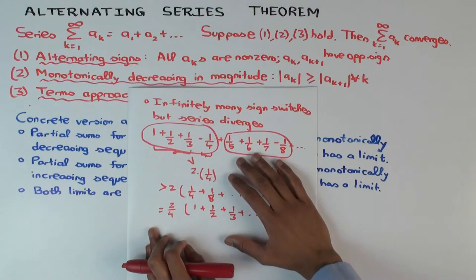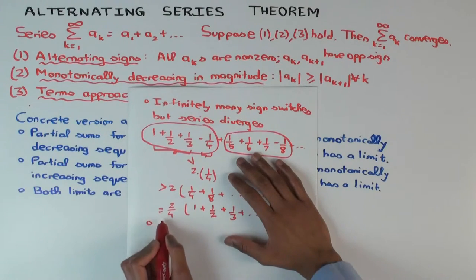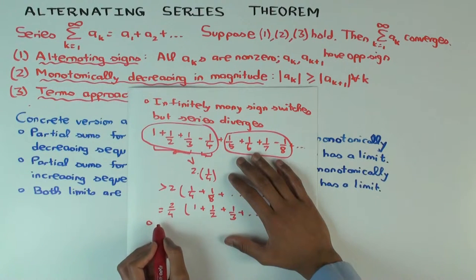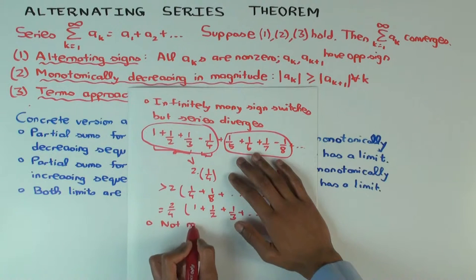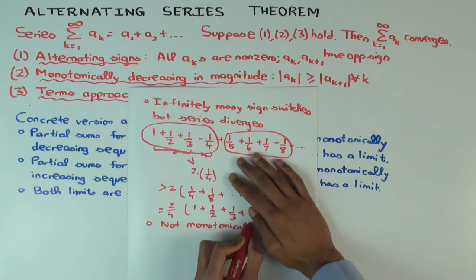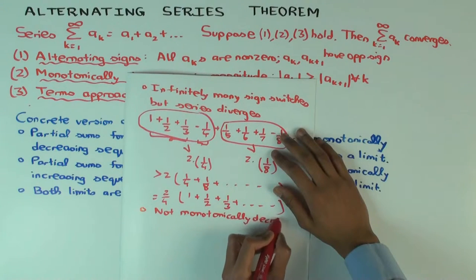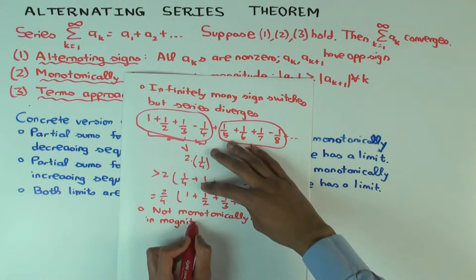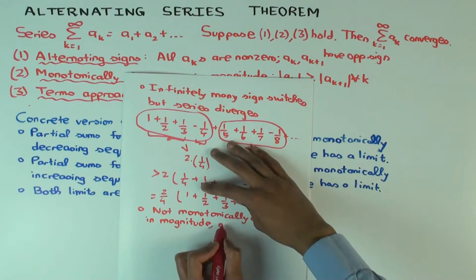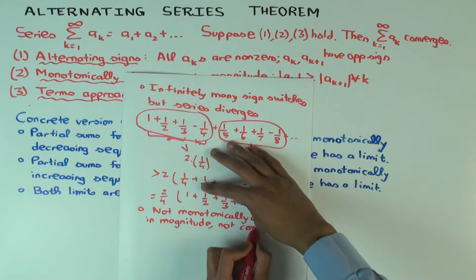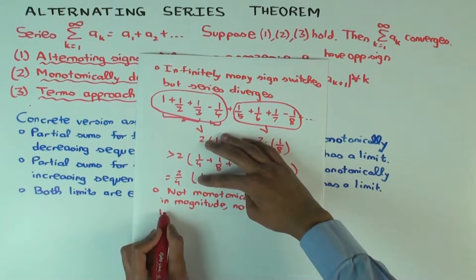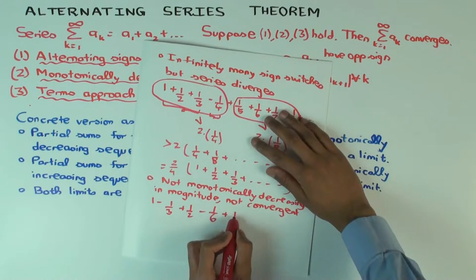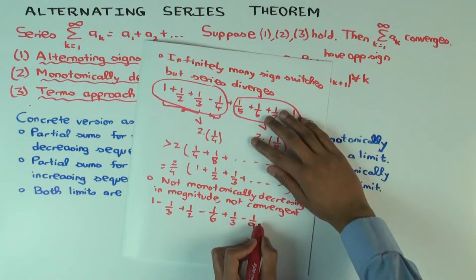The next condition I want to challenge is monotonically decreasing in magnitude. I want to give an example where the signs are alternating, the terms approach zero, but they're not monotonically decreasing in magnitude, and it doesn't converge. You could randomly switch the order of the sequence we just used, but that would be more painful to write down. So let me write something I have in mind.